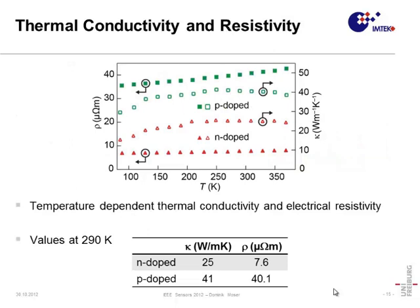The results of the thermal conductivity and resistivity measurements are shown in this graph. The properties depend strongly on the doping type of the material. For n-doped polysilicon, a thermal conductivity of 25 W/(m·K) was found, whereas the p-doped material shows a value of 41 W/(m·K). The respective resistivity values measured by the van der Pauw method are 7.6 and 40.1 µΩ·m.